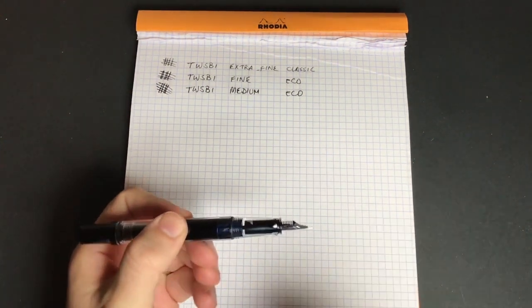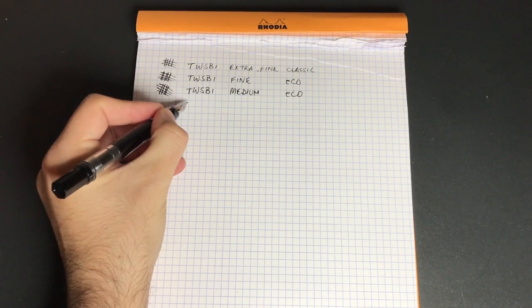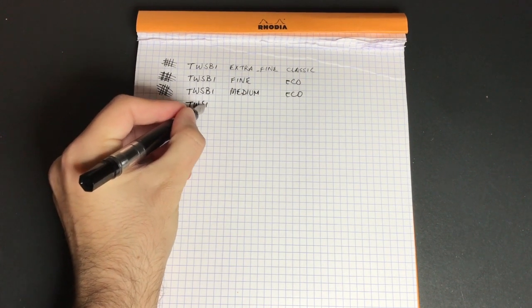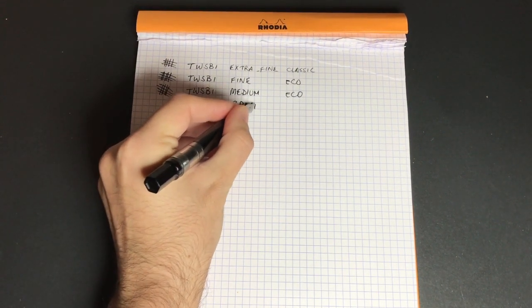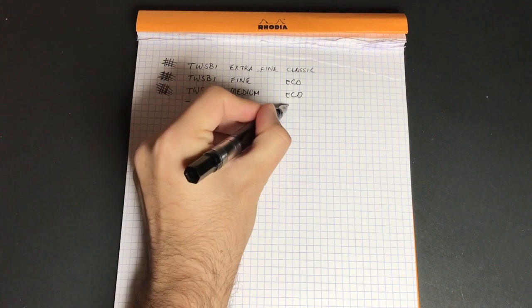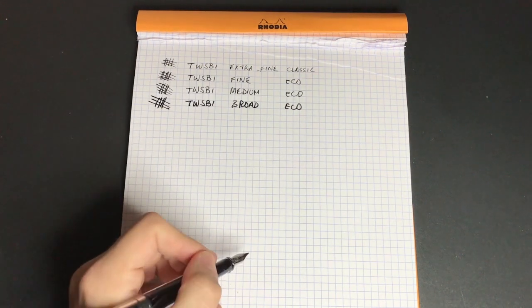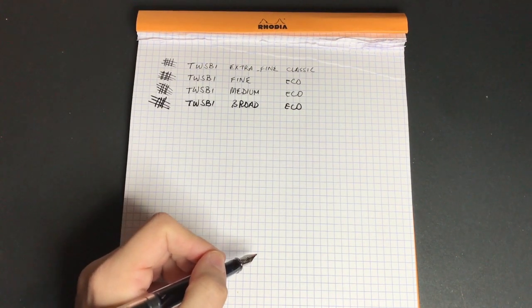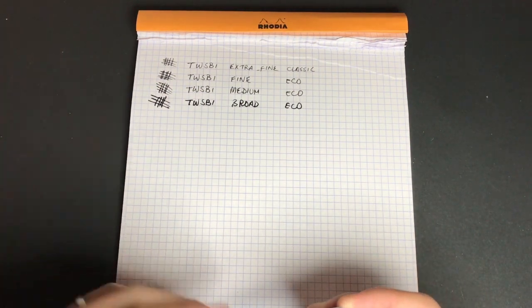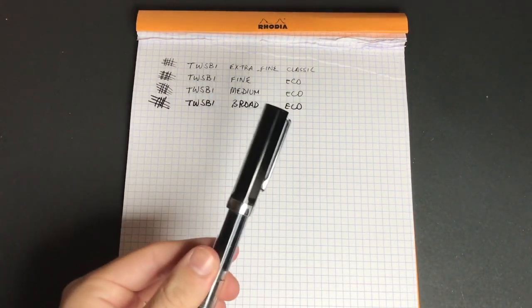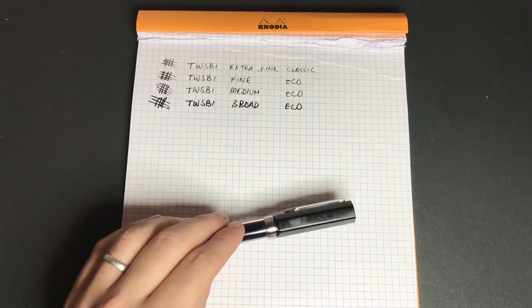Here in another Eco we have the broad now. This really becomes quite broad. Once again this is an Eco. So yeah you can really see the difference now. It's quite a wet pen and it's got a lot of, it's a great flow and it's very very smooth. It's actually one of my favourite pens and a pen I use to review ink because it lays down such a generous line.